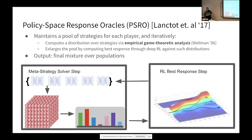This was called empirical game theoretic analysis, but what we did in 2017 was basically just bring in deep reinforcement learning. It inspired the main method behind AlphaStar — AlphaStar does something more sophisticated, but it's in the same genre.